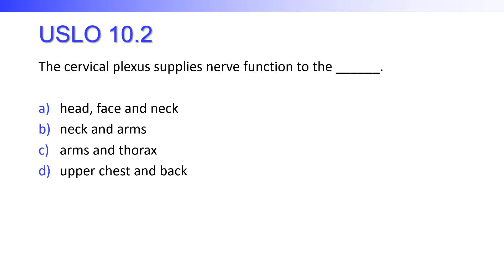The cervical plexus supplies nerve function to the head, face, and neck; the neck and arms; the arms and thorax; or the upper chest and back? Hopefully you said the neck and arms. So who is applying nerve function to the face? Good question.